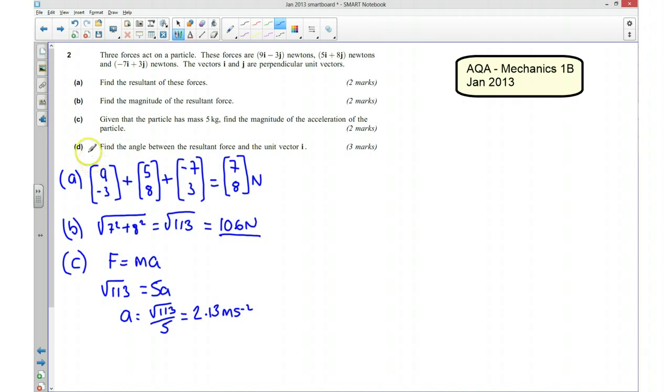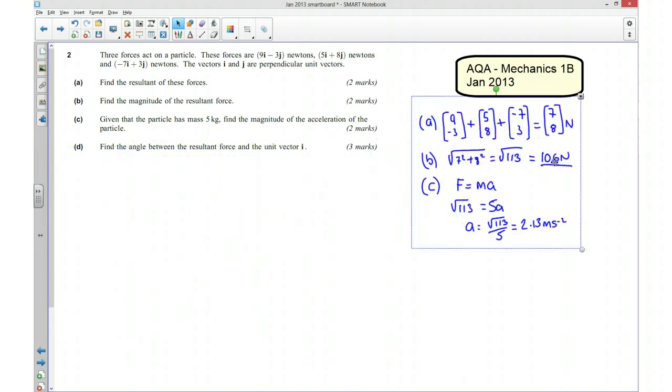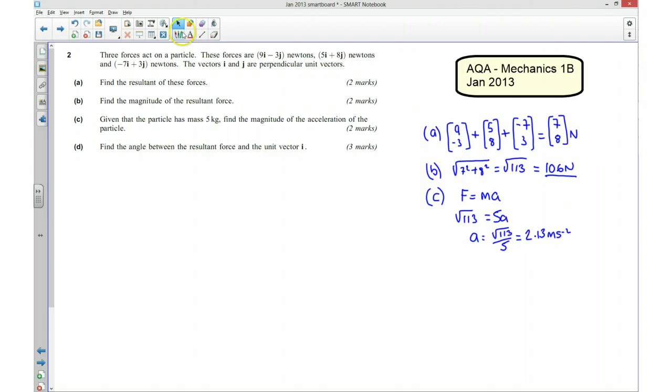Part D is asking us to find the angle between the resultant force and the unit vector I. So I'm just going to move this over here to give us a little bit more room. So I'm going to draw myself a quick diagram.